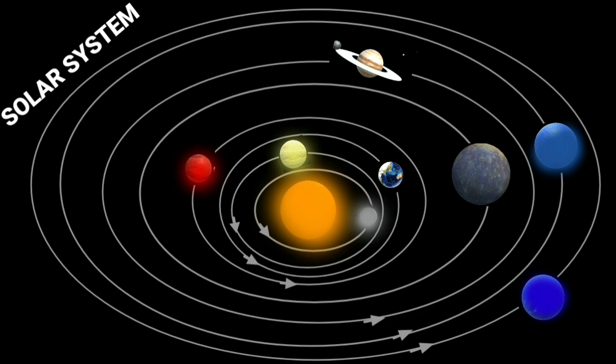Asteroids: There is a large gap in between the orbits of Mars and Jupiter. This gap is occupied by a large number of small objects that revolve around the sun. These are called asteroids.